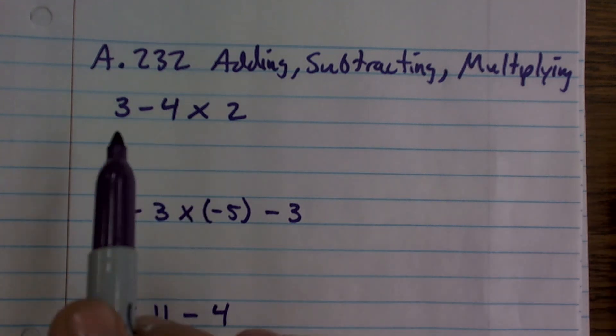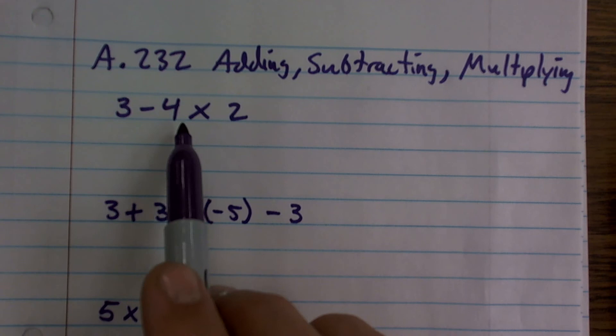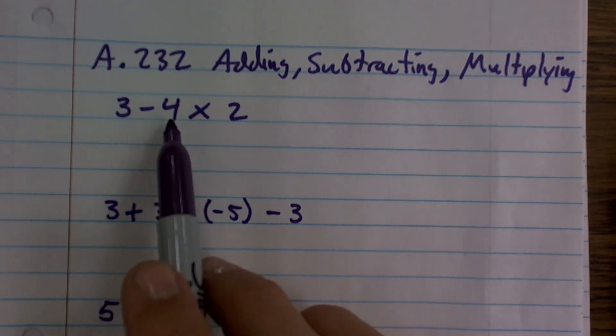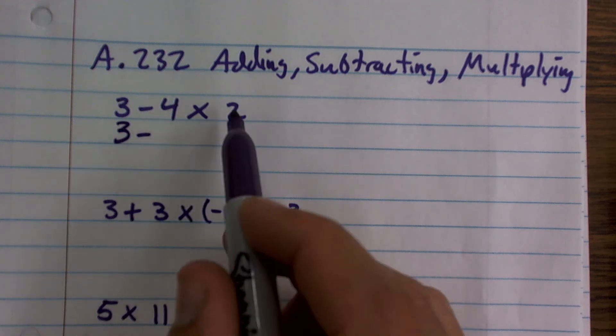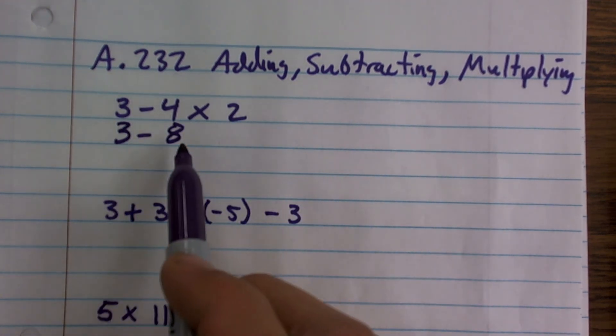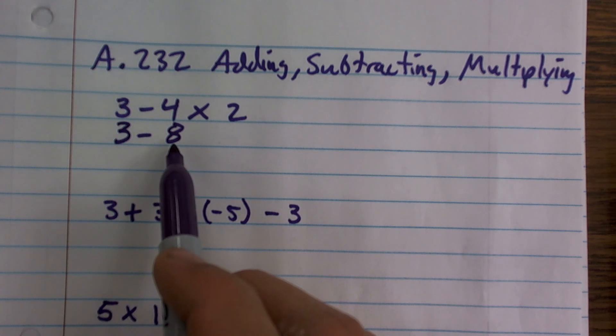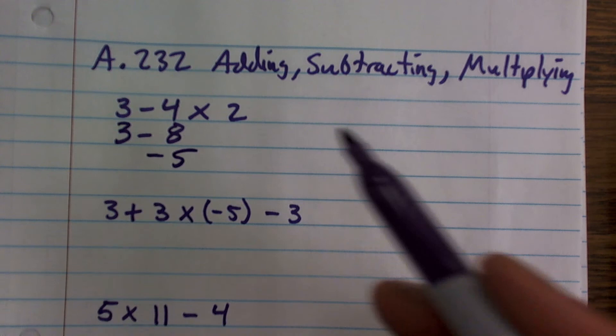So for the first problem, I have 3 minus 4 times 2. So that means I just do 4 times 2. So it would be 3 minus 4 times 2, which is 8. Now, 3 minus 8 is going to leave me with negative 5.